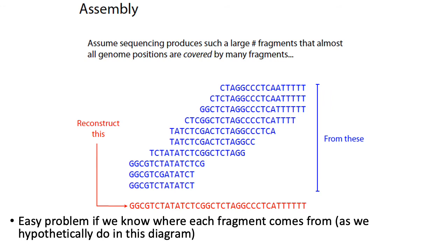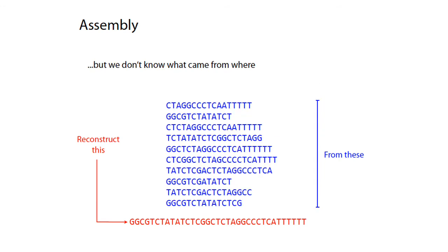The point is that this is a really easy problem if you know where each fragment of DNA came from in terms of its original position on the genome. If we knew where each read originated from in the original sequence, you could determine the order of these fragments, line up the reads as shown in the diagram, and read the sequence left to right. What makes assembly really hard is that for de novo assembly you don't know the genome sequence ahead of time — all you have are the reads in blue, and you're trying to reconstruct the genome in red without knowing where each fragment came from.